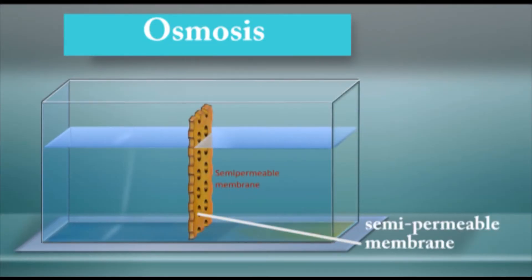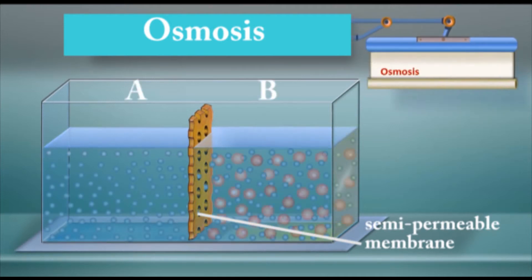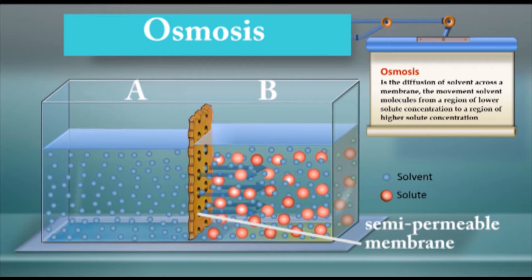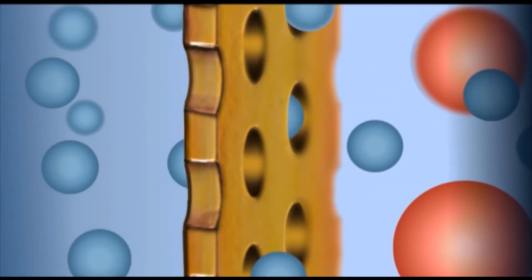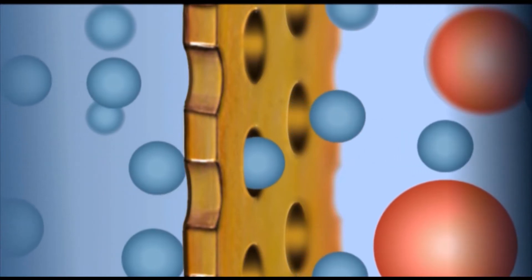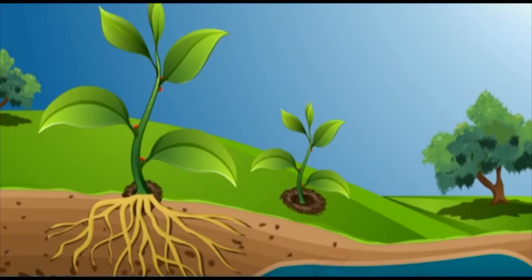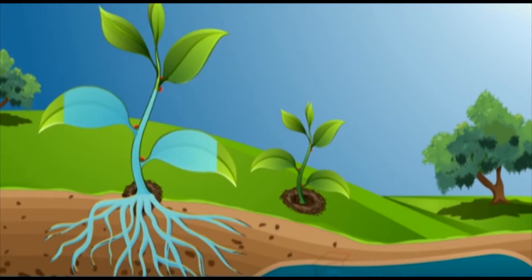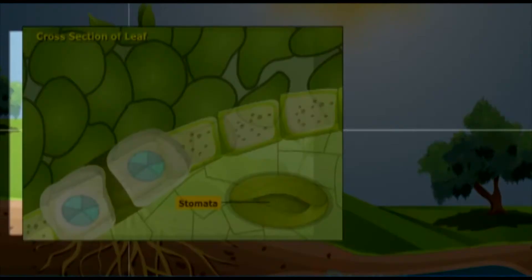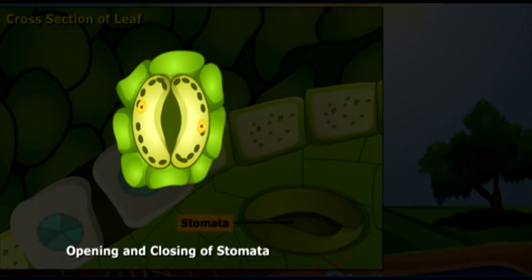Initially, the concentration of the water molecules in area A is higher than area B. As a result of osmosis, the water molecules start to move from area A to area B across a semi-permeable membrane. Osmosis has several advantages in living organisms. For example, water enters from the soil to the roots of the plant by osmosis. Osmosis is also important in the opening and closing of stomata in plants, which enables plants to release oxygen into the environment and take in carbon dioxide from the atmosphere.